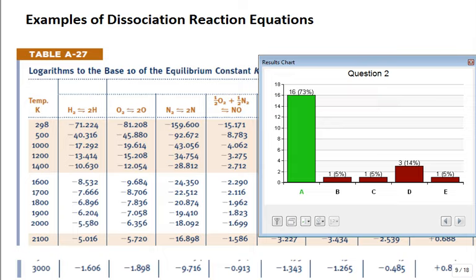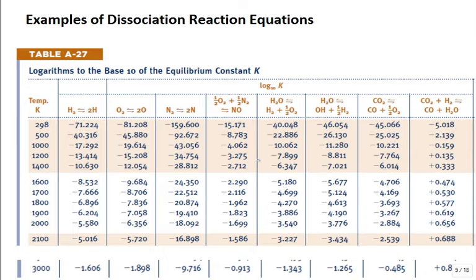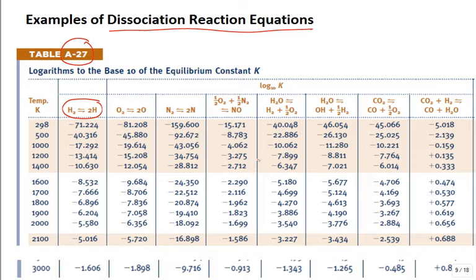We go to Table A27, one of the final tables in the textbook. We are introduced to this table — it contains examples of dissociation reaction equations.